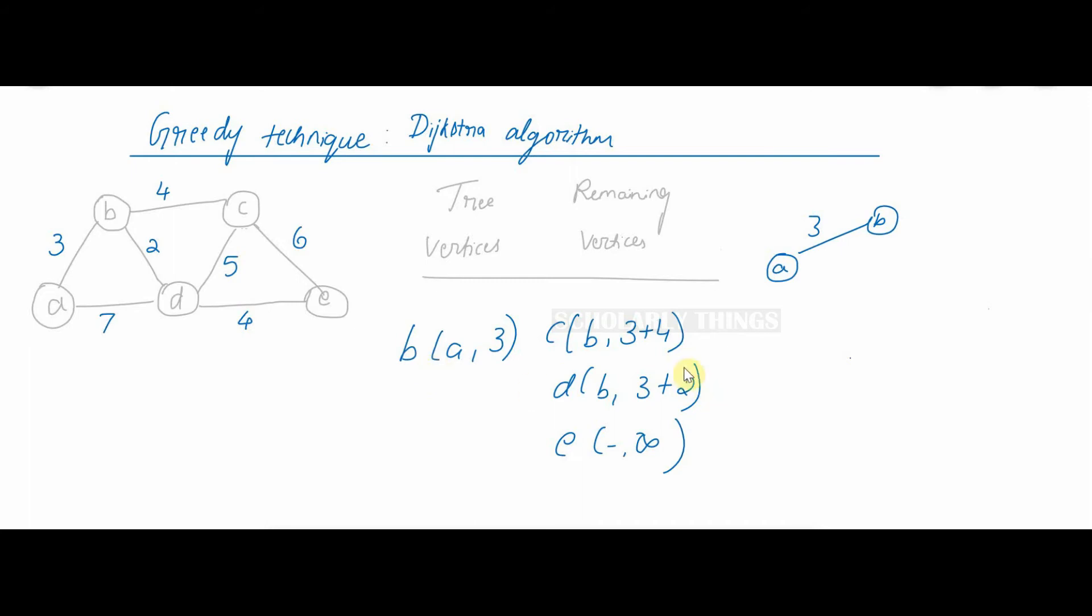Now we are at B. These are the remaining vertices. From B you can reach C and D. You can't reach E yet. We should always remember that we are seeing the shortest path from the source A. So from A I have already come to B. The next shortest path is for the node D with weight 2, so from B I can go to D.